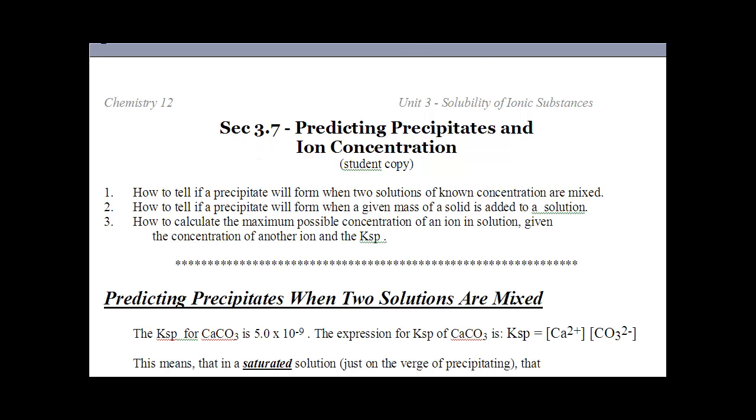Ladies and gentlemen, section 3.7. We need to predict whether a solid is going to form in solution. To predict whether a solid is going to form, you have to calculate what's called the trial KSP and compare it to the real KSP. Very similar to what we were doing in chapter 2 with trial KEQ, comparing it to the real KEQ.